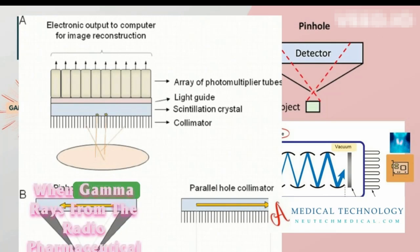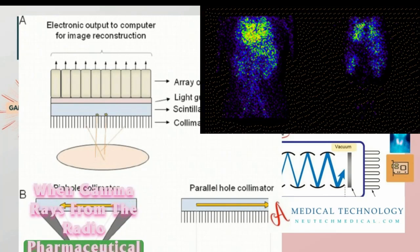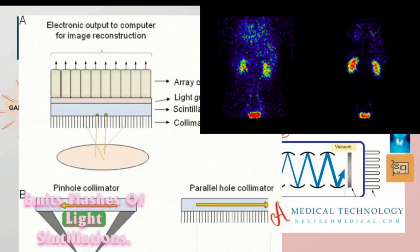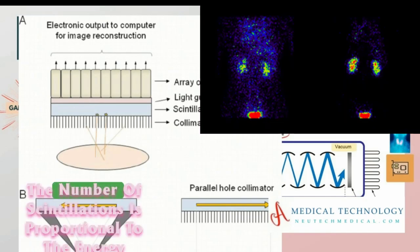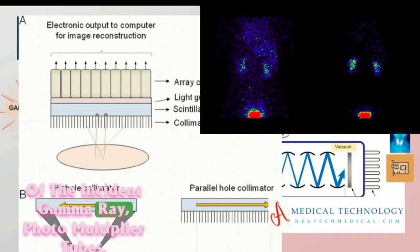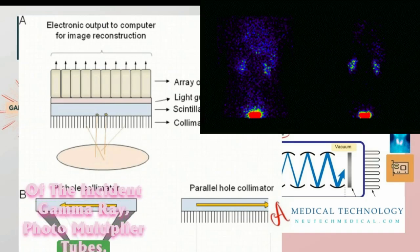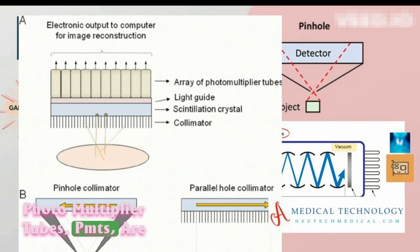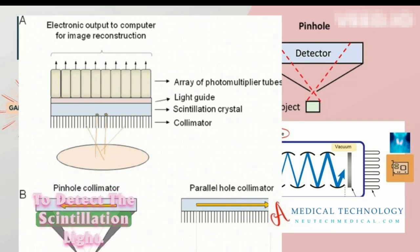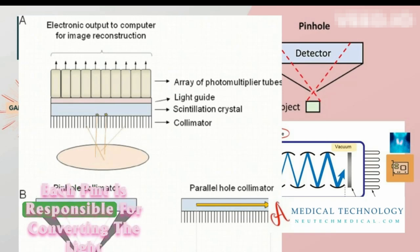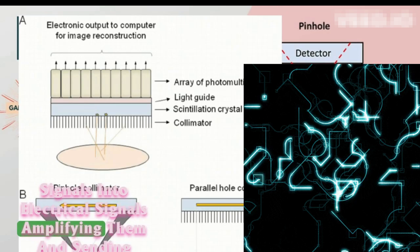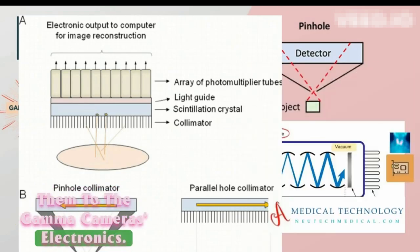Gamma ray detection: When gamma rays from the radiopharmaceutical interact with the scintillation crystal, the crystal emits flashes of light (scintillations). The number of scintillations is proportional to the energy of the incident gamma ray. Photomultiplier tubes (PMTs) are positioned around the scintillation crystal to detect the scintillation light. Each PMT is responsible for converting the light signals into electrical signals, amplifying them, and sending them to the gamma camera's electronics.